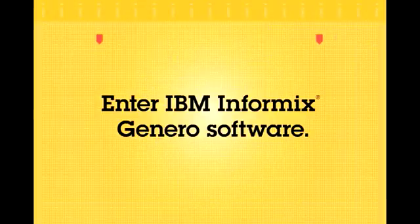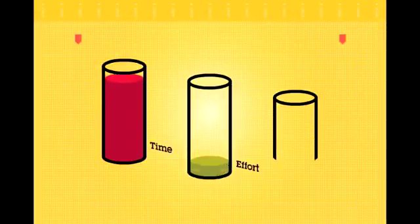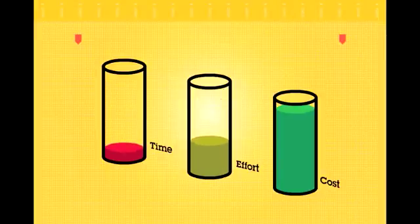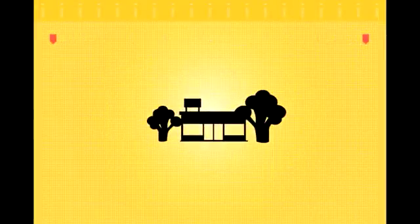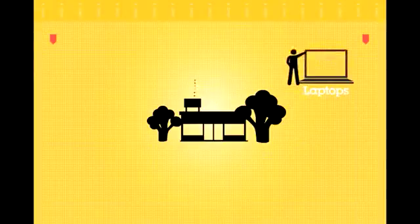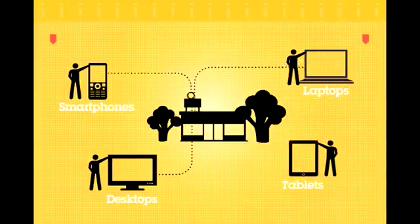Enter IBM Informix Genaro software. This innovative application development and deployment environment helps you produce mission-critical applications faster, more easily, and with less cost — not just across your company, but also across the myriad technologies customers work in every day, including smartphones and tablets.